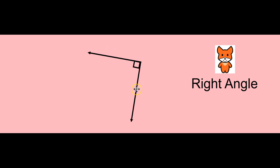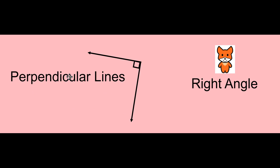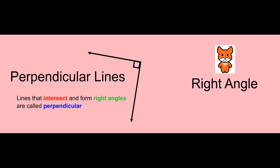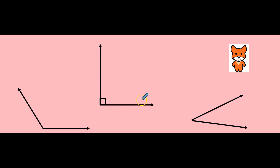Lines or line segments that intersect and form right angles are called perpendicular lines. Perpendicular lines are lines that intersect and form right angles. So this is my right angle.